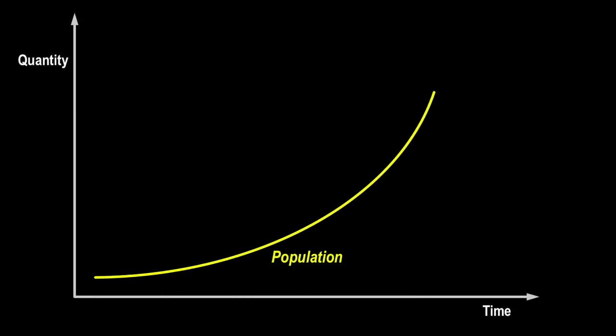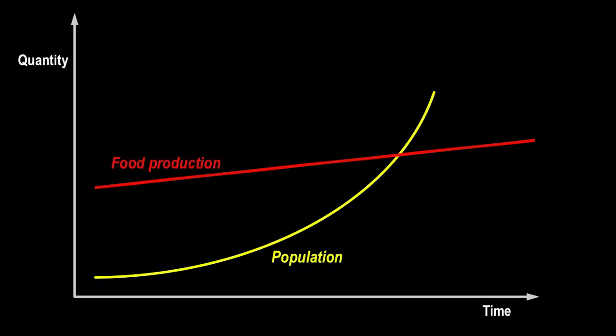According to Malthus, population tends to increase faster than the supply of food available for its needs. Whenever a gain occurs in food production it results in higher population growth. Over time, population growth will exceed the increase in agricultural production and population will crash due to food shortages. The mathematical basis of this idea is that population grows at a geometrical rate: 2, 4, 8, 16, 32, etc.